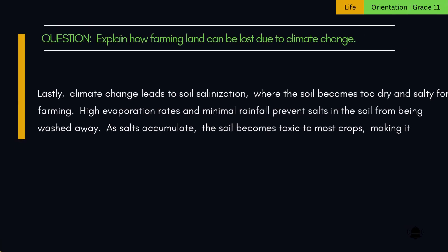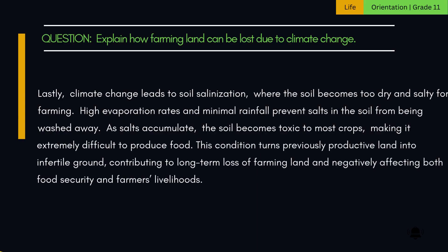Lastly, climate change leads to soil salinization, where the soil becomes too dry and salty for farming. High evaporation rates and minimal rainfall prevent salts in the soil from being washed away. As salts accumulate, the soil becomes toxic to most crops, making it extremely difficult to produce food. This condition turns previously productive land into infertile ground, contributing to long-term loss of farming land and negatively affecting both food security and farmers' livelihoods.